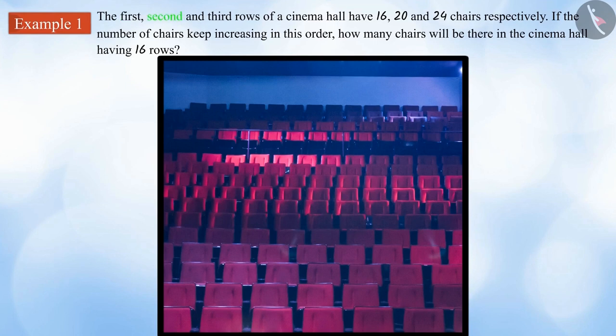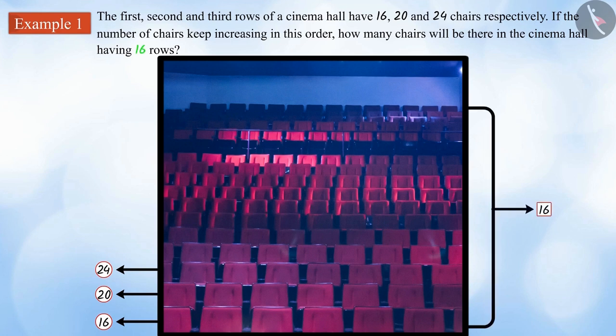The first, second and third rows of a cinema hall have 16, 20 and 24 chairs respectively. If the number of chairs keep increasing in this order, how many chairs will be there in the cinema hall having 16 rows?